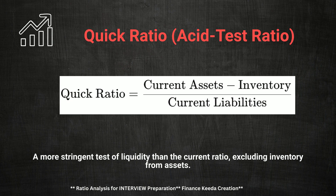We cannot overlook the Quick Ratio, often referred to as the Acid Test Ratio. This ratio is a more stringent measure of liquidity as it excludes inventory from Current Assets. The formula is Current Assets minus Inventory, divided by Current Liabilities. An interview question you might encounter is: why is the Quick Ratio considered a more conservative measure of liquidity? The Quick Ratio provides a clearer picture of a company's ability to meet its short-term obligations without relying on the sale of inventory, which may not be easily liquidated.